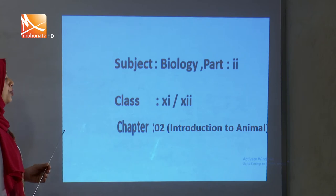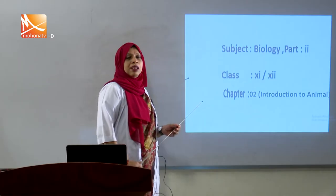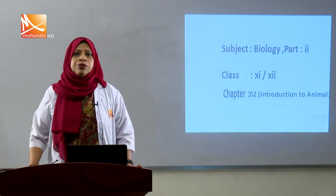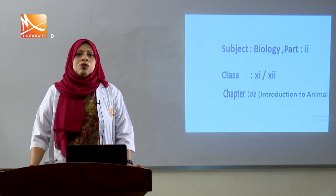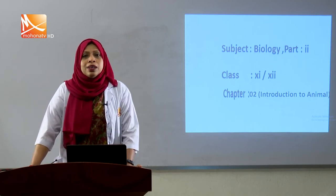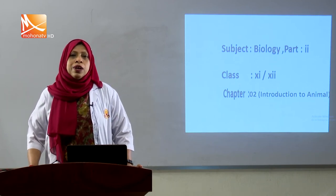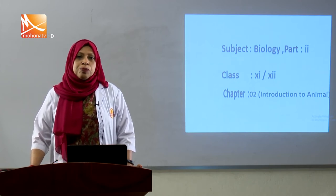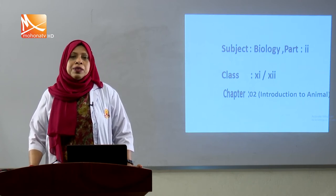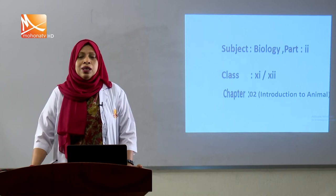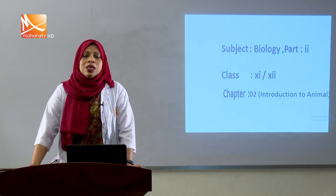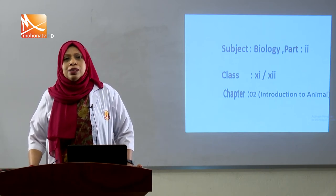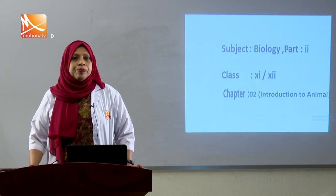Chapter 2 includes 3 animals representing 3 different phyla. Number 1 is Hydra, representative of Phylum Cnidaria. Number 2 is Grasshopper, representative of Phylum Arthropoda. And the last one is Rui fish, representative of Phylum Chordata.